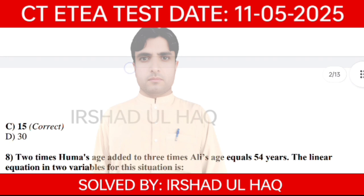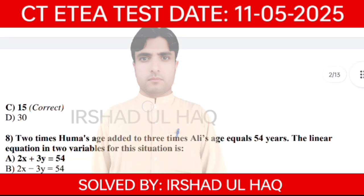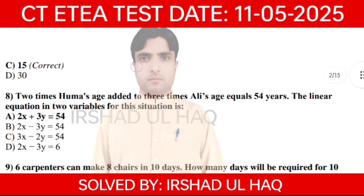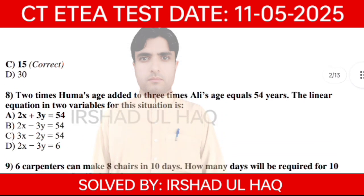Question number 8. 2 times Huma's age added to 3 times Ali's age equals 54 years. The linear equation for this situation is option number A: 2X + 3Y = 54.